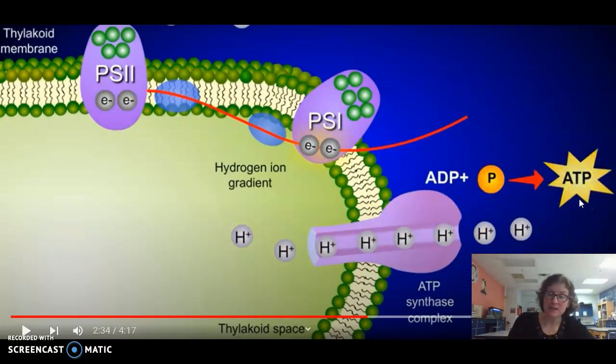That ATP that's made inside a chloroplast has a different fate than the ATP that's made in mitochondria. In mitochondria, all the ATP is going to go out into the cell and help with all the cell work throughout the cytoplasm. In a chloroplast, it's a little bit different. That ATP is going to be used primarily to fuel the next part of photosynthesis, which is the Calvin cycle.